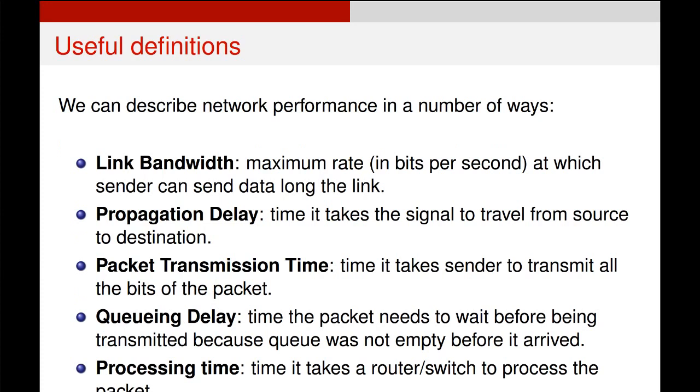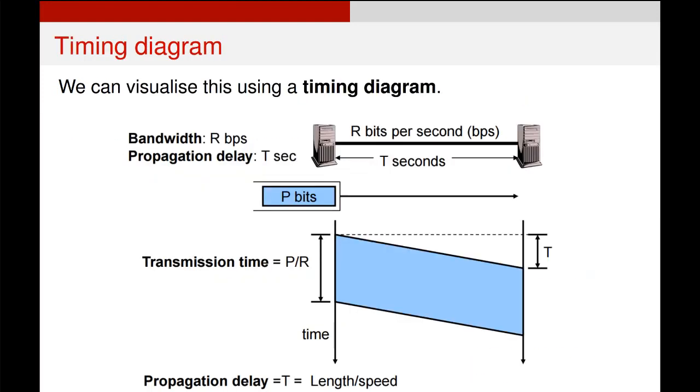Link bandwidth is how many bits per second you can send down a connection. A propagation delay is how long it takes a bit of information to be sent from you to some other target. The transmission time for a packet can be how long it takes the entire packet of information to be transmitted. The queuing delay is how long it takes some stop along a route to process that packet. And the processing time is how long it takes a switch or a router along that path to actually process it.